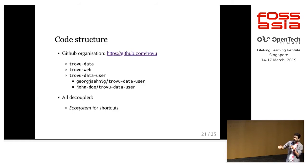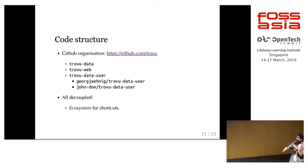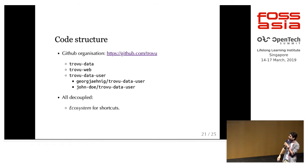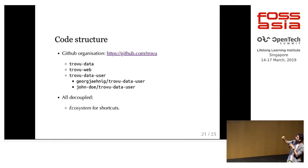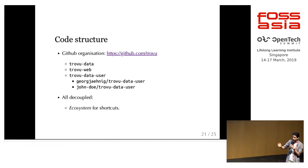Here is the code structure. We have a GitHub organization at '/trovo'. There is 'trovo-data', which contains only the YAML files. We have the web interface in 'trovo-web'. And there is a template, 'trovo-data-user', that you can fork and then create namespaces and shortcuts within your own repo. It also has a config YAML file so you can adjust it to your needs.